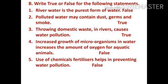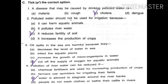Now the next question: tick the correct options. First question: a disease that may be caused by drinking polluted water is cholera, because malaria and dengue are spread by mosquitoes and cough is an infectious disease.